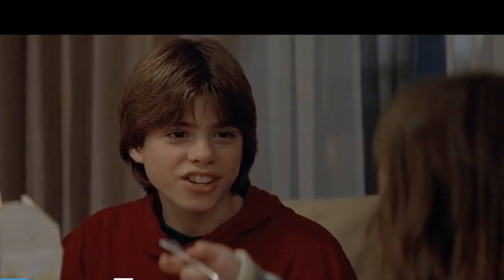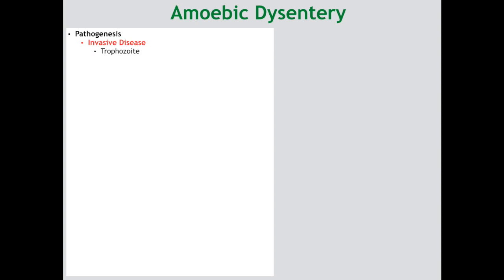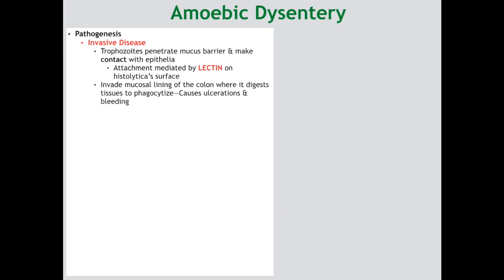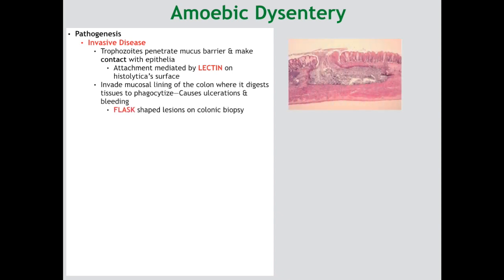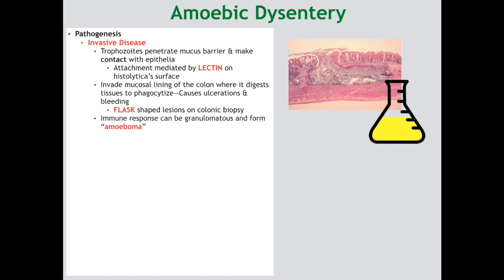Now for amoebic dysentery. Dysentery starts off with localized disease becoming invasive — when the trophozoites are able to penetrate the mucous barrier in the large intestine and make contact with the epithelium. This attachment is mediated by the protein lectin on histolytica's cell surface, allowing histolytica to invade the mucosal lining. It starts secreting lytic enzymes to digest our tissues, causing ulcerations and bleeding — leading to occult blood (hematochezia) and what are called flask-shaped lesions on colonic biopsy. This is the major buzzword to remember. A granulomatous reaction is also possible, termed an ameboma.